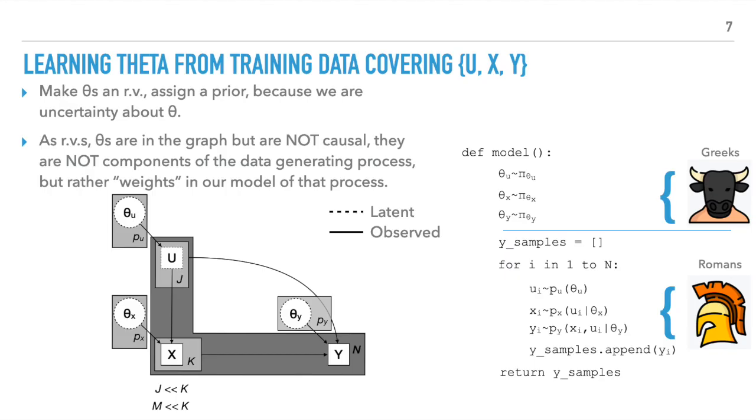Now suppose we did not know the parameters of the conditional distributions. We can model them as random variables and make them explicit in the DAG, like in a Bayesian hierarchical model. To be clear, these thetas are not causes. They just parameterize the conditional distributions of our original set of variables. We call these parameters Greeks, written in Greek letters, and distinguish them from the Romans, written in the Roman alphabet. Romans are components of the data generating process that have causal relationships, U, X, and Y in our example. Greeks parameterize the Roman distributions.